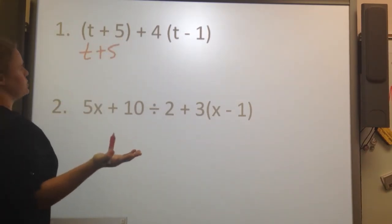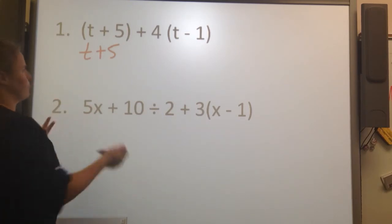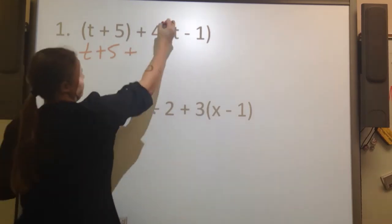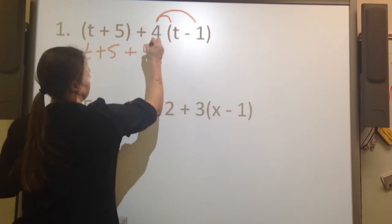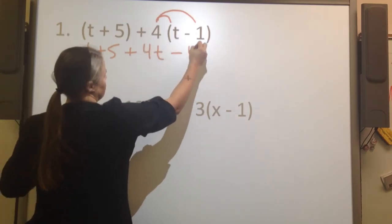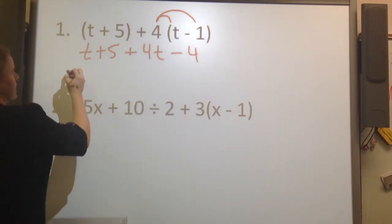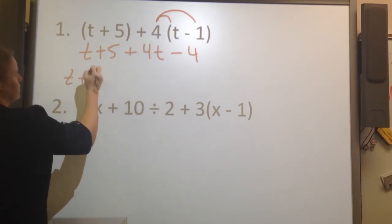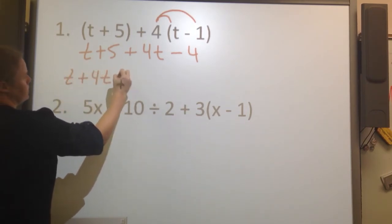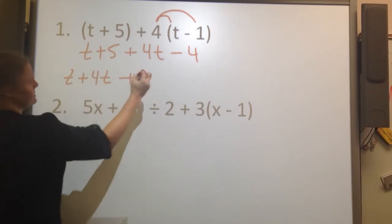So we have t plus 5, there's nothing to distribute with that, so I'm just going to bring it out of the parentheses. My 4 does need distributing.